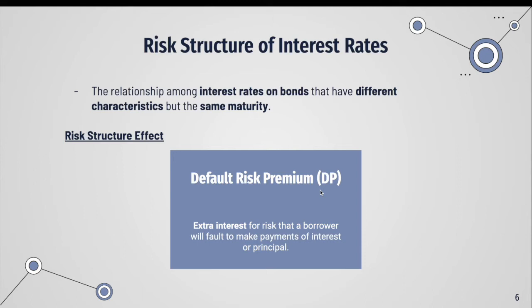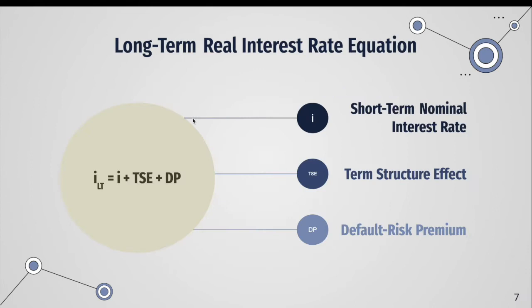This compensates investors for the possibility that corporations might default on the bonds. Similarly, households must also pay a default risk premium when they borrow money, because they may default on loans they receive. This is simply the risk associated with borrowing.